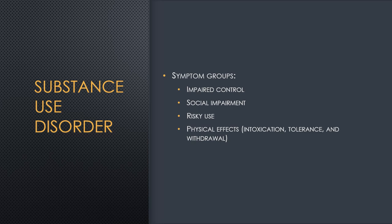When we think about substance use disorder, these are symptoms that are grouped together. They usually have impaired control, social impairment, risky use, and some of the physical effects include intoxication, tolerance, and withdrawal. All of these groups are going to have all of these symptoms.